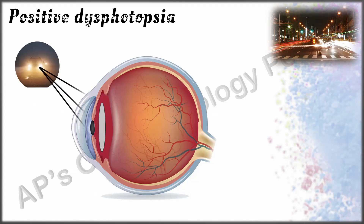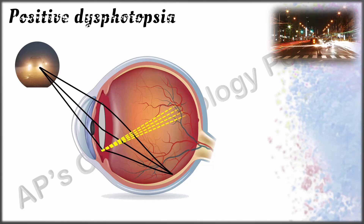This is how images from a normal light source would be formed. Some of the rays that fall on the square or truncated edge get reflected, resulting in unwanted positive dysphotopsia.